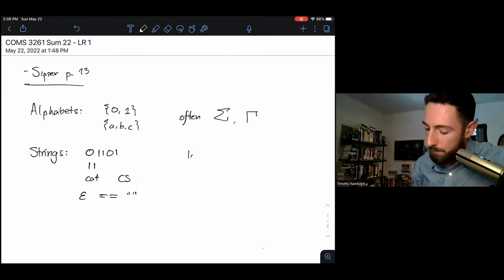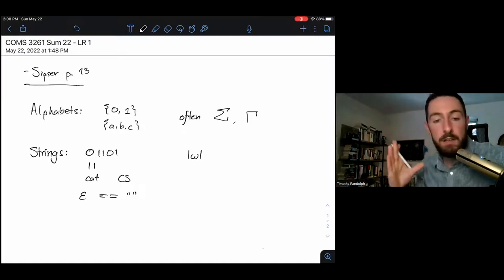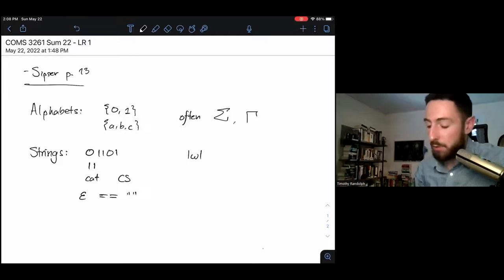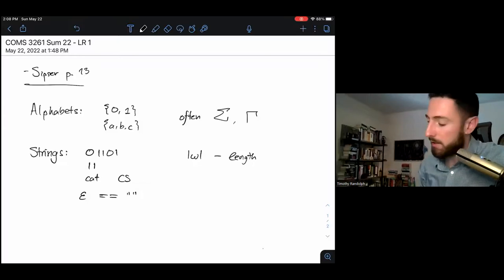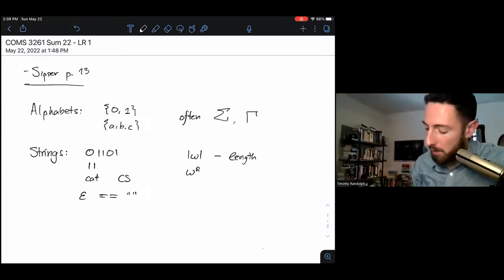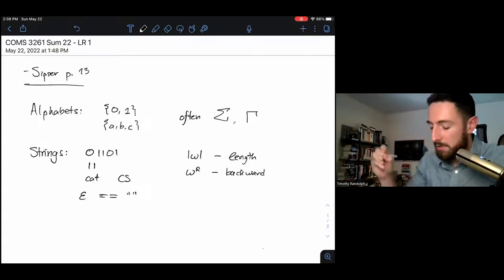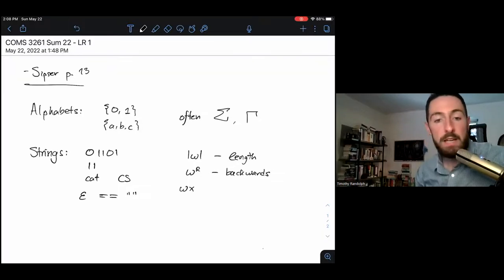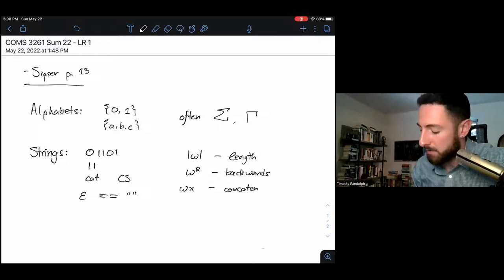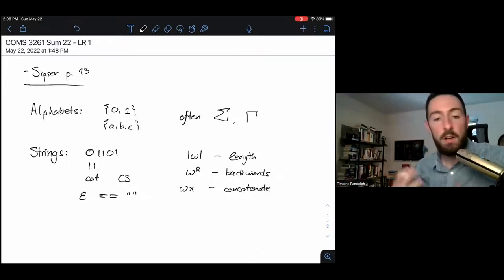If we have some string w, we might write |w|, like absolute value of a number, to mean the length of that string in characters. We might write w^R, to mean w backwards or w reversed. And if we have two strings w and x, we might just write them next to each other to indicate that we're going to concatenate those strings. That is, all the characters in w immediately followed by all the characters in x.